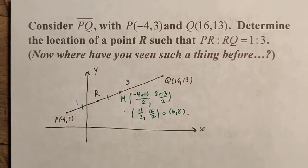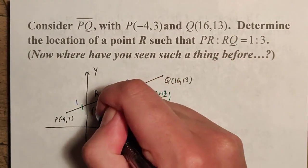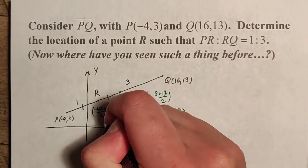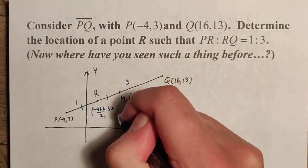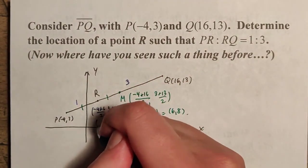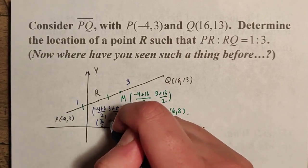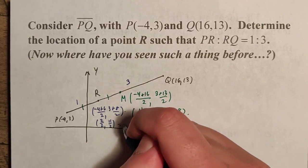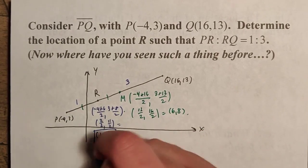And now we can figure out where R is because R is the midpoint of PM. So now we can just do the midpoint again with just these two. It should be negative 4 plus 6 over 2 and 3 plus 8 over 2. So this is going to be negative 4 plus 6 is 2. So it's 2 over 2 comma 11 over 2. That is the point 1 comma 11 over 2. That should be the location of point R.